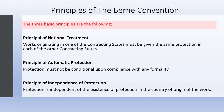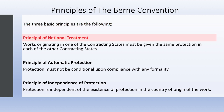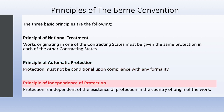Now let us talk about the principles of the Berne Convention. The three basic principles are: the principle of national treatment — works originating in one of the contracting states must be given the same protection in each of the other contracting states; the principle of automatic protection — protection must not be conditional upon compliance with any formality; and the principle of independence of protection — protection is independent of the existence of protection in the country of origin of the work.